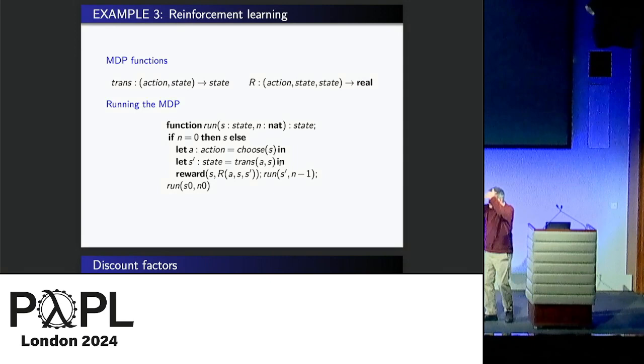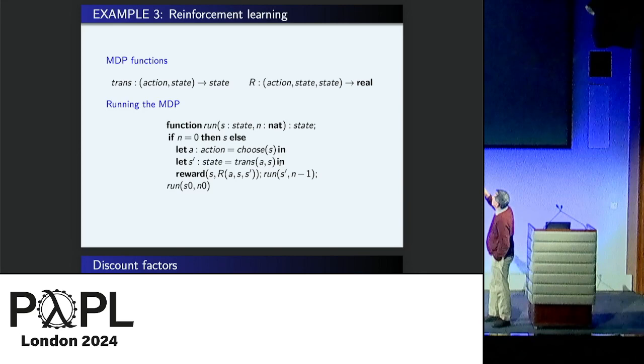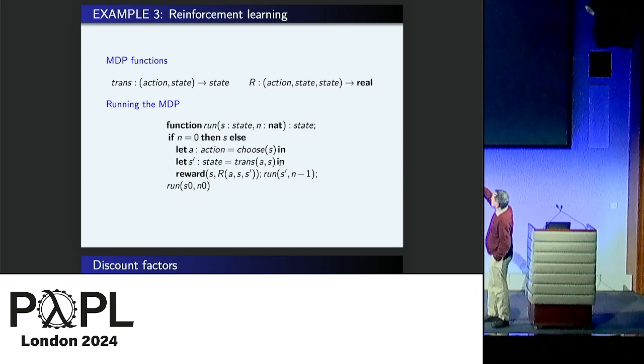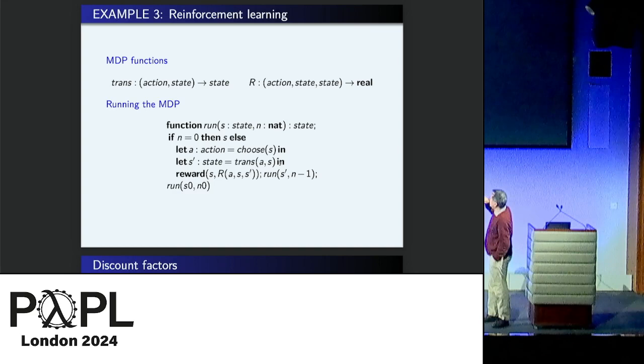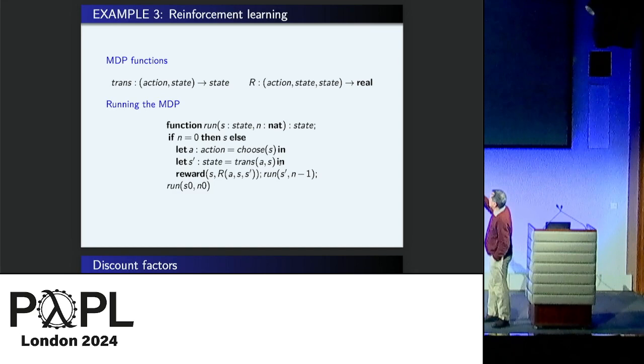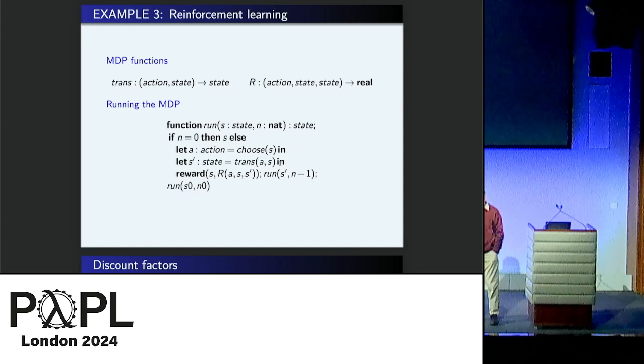So here's reinforcement learning. It's another example. So we have Markov decision processes. They've got transition functions, probabilistic. I haven't really talked about that. Given an action and a state, you get a new state. And given an action and the previous state and the next state, you get a reward. That's a general sort of thing. And this function is just running the Markov decision process for n times. So if n is zero, you're finished. Otherwise, you choose a state and you do the appropriate transition and you return a reward.